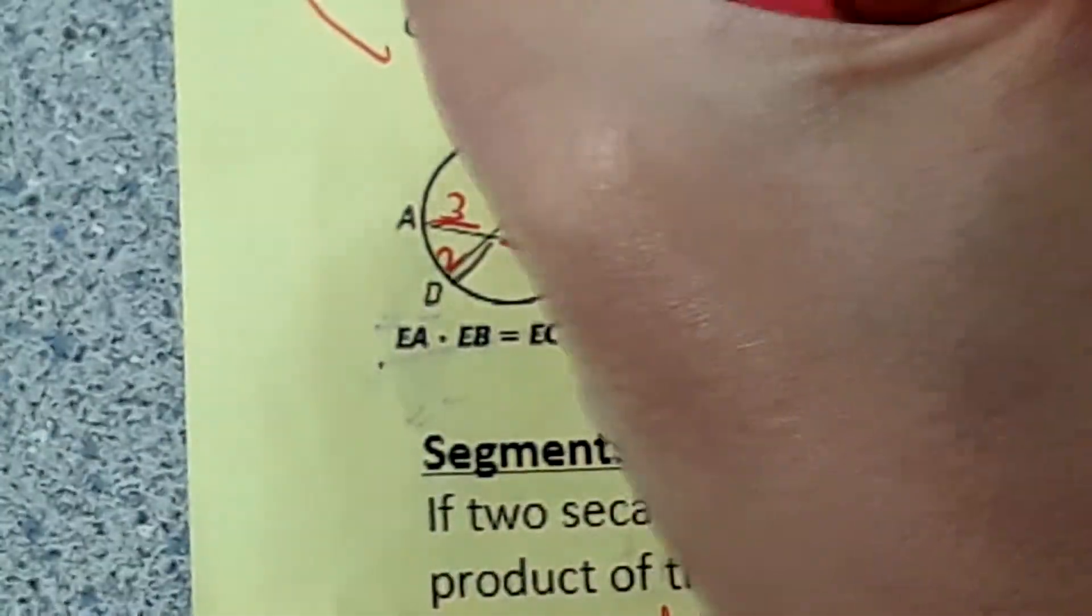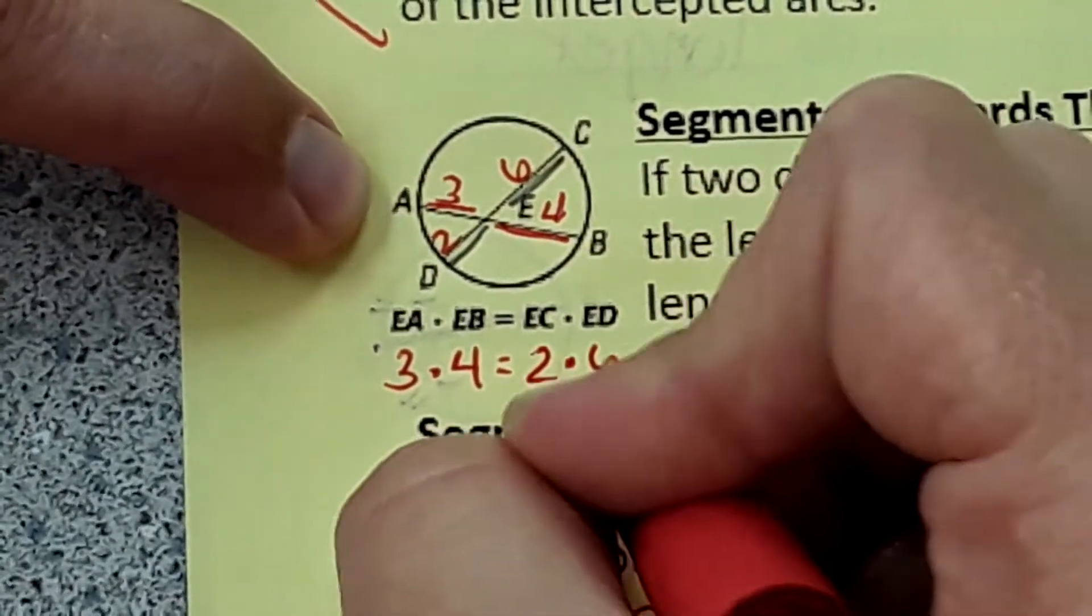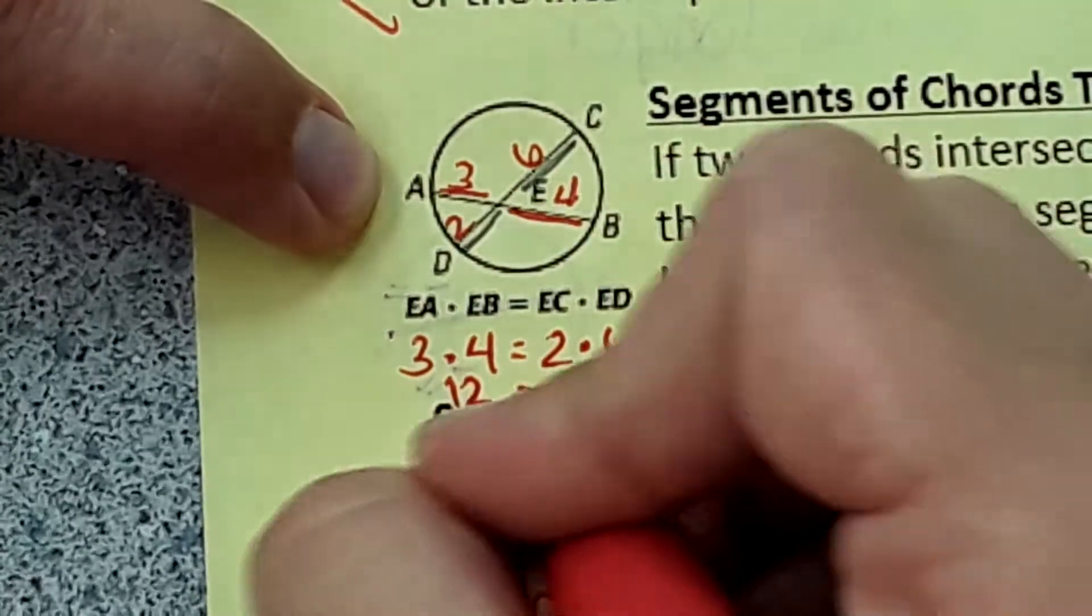If this was 3 and 4 and this is 2 and 6, then you should be able to say that 3 times 4 equals 2 times 6. That's how the equation works and 12 does equal 12.